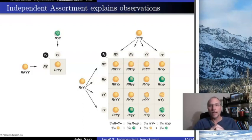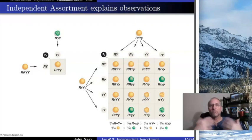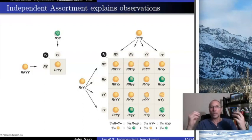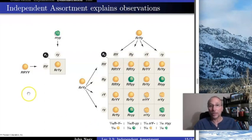He claims to have done this for all pairs of those seven traits and claims he got a 9:3:3:1 ratio each time. Whether or not he actually did all of that, we don't know — but it doesn't matter. We demonstrated later that he was exactly correct: that statement is exactly correct, and therefore all of those traits are independent of each other.